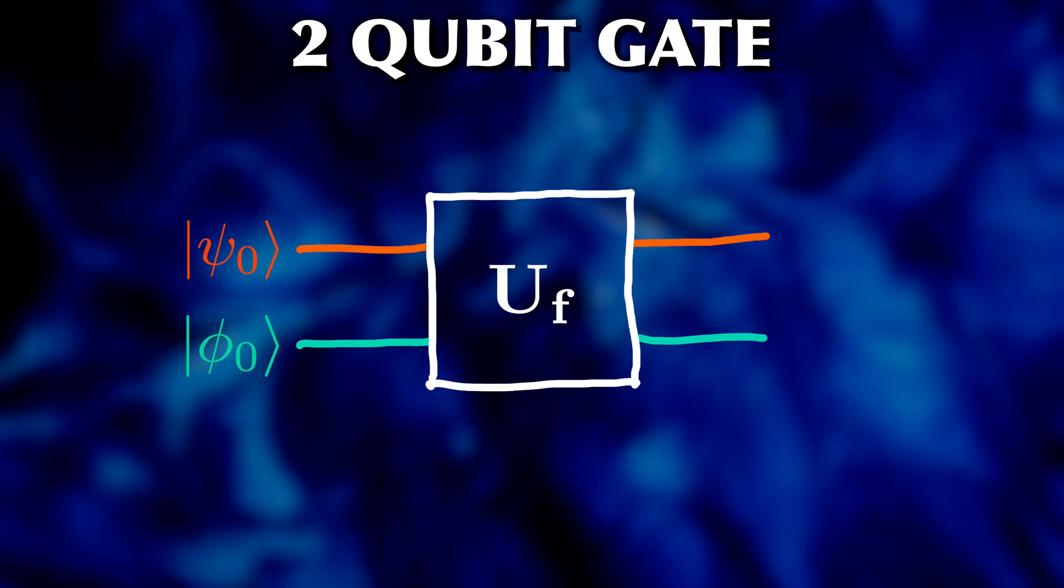Because of the laws of quantum mechanics, any operation on a quantum state must be reversible. So we always have a specific structure for two qubit gates, where both qubits have a particular role.